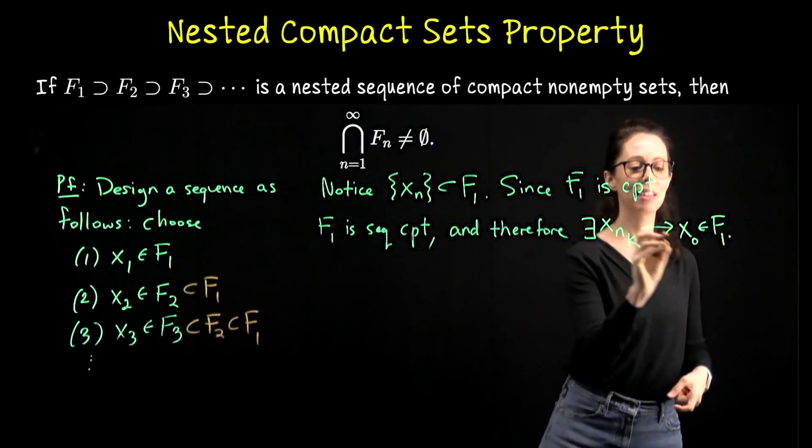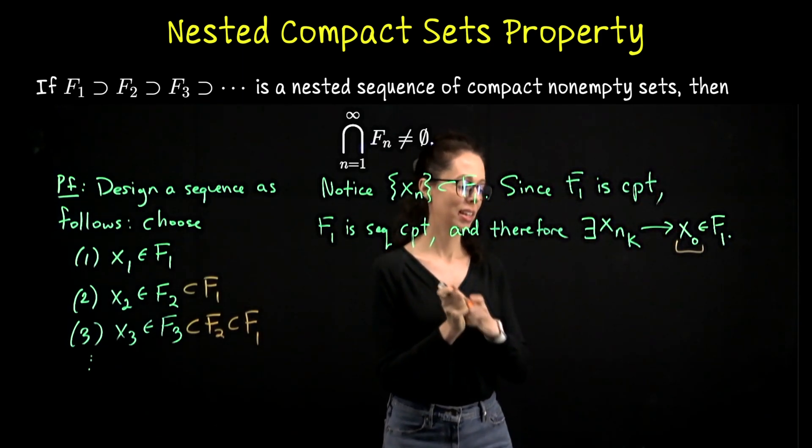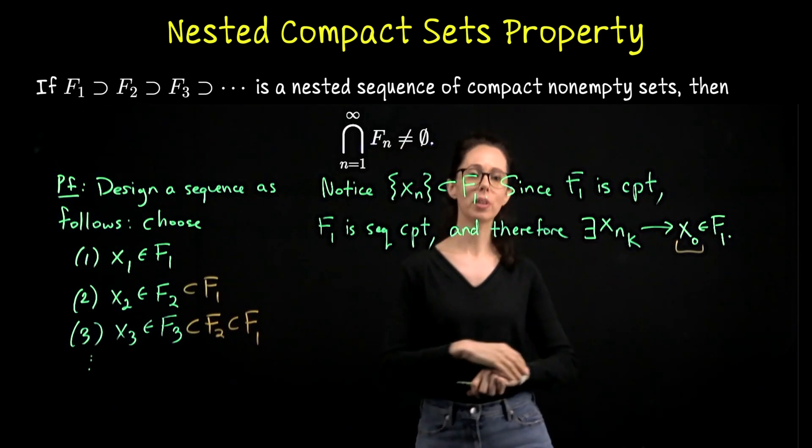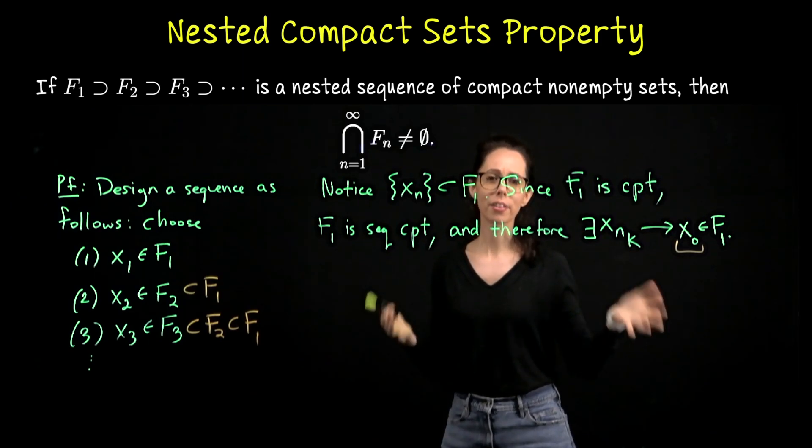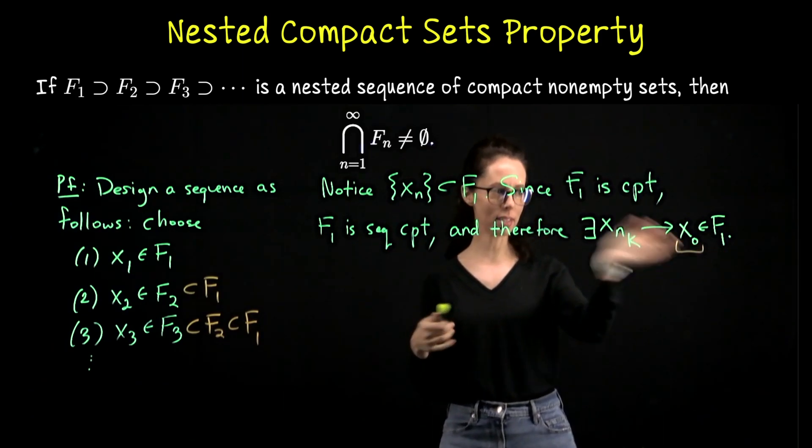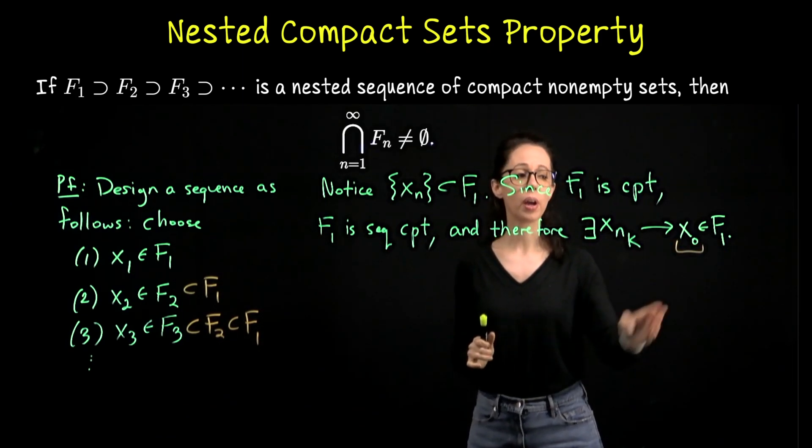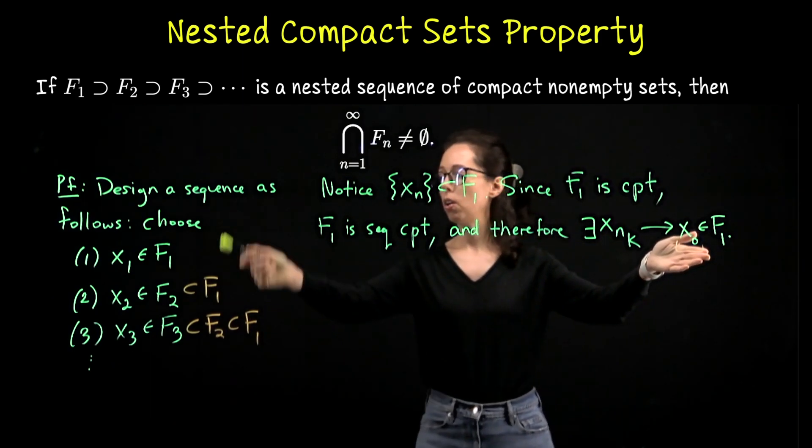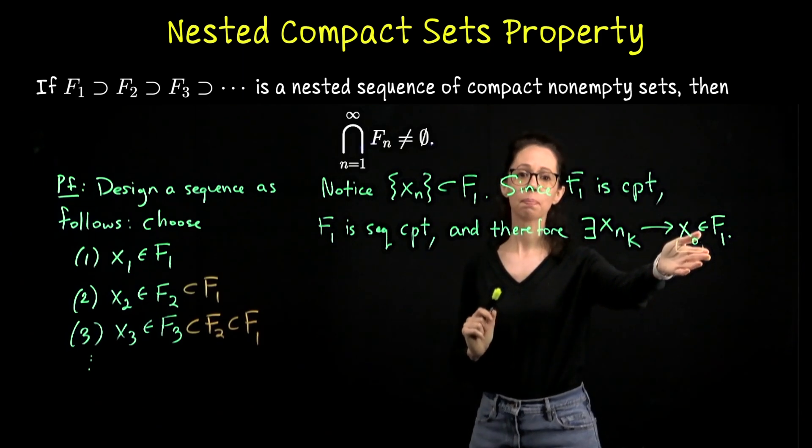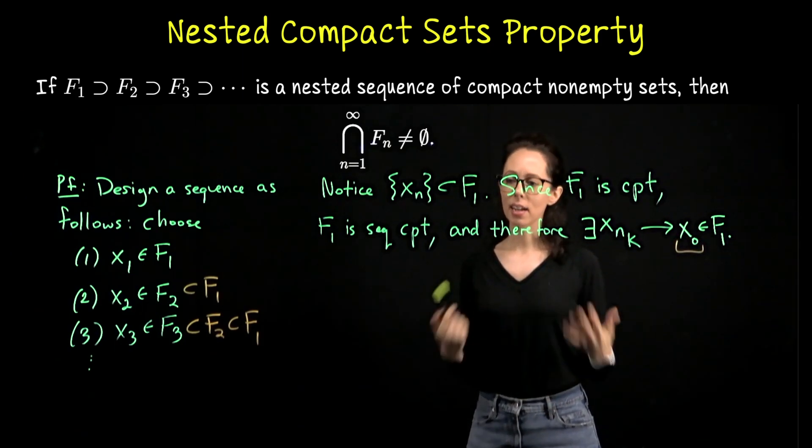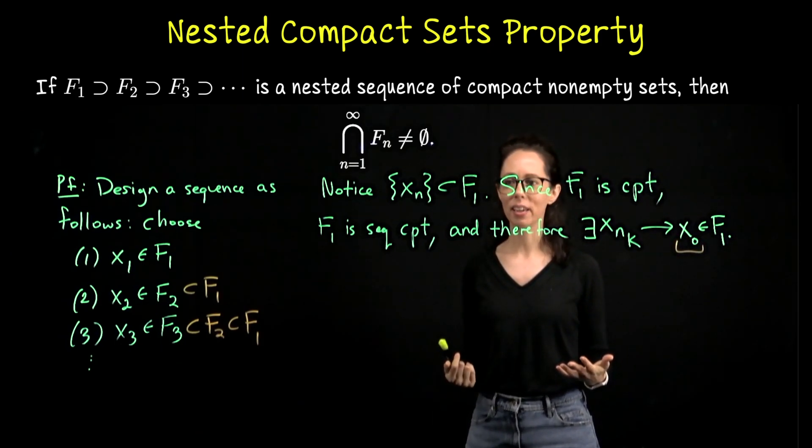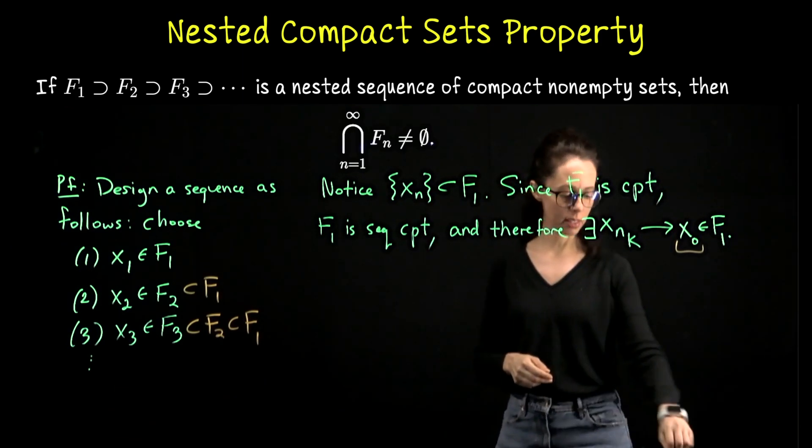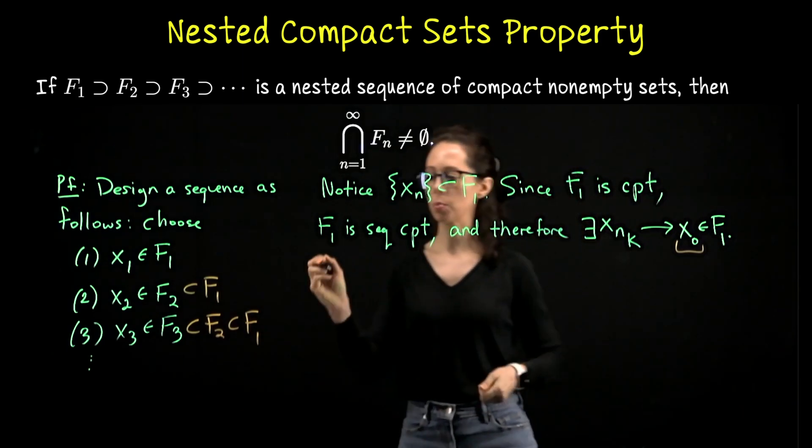This limit here is what I claim will live in the intersection. So it's the reason why this is not going to be empty. There may be other things that survive the intersecting process, but this definitely will. That's what we have to show. We need to show that this limit actually lives in all of this family. It's not too bad. Let me write out a demonstration for what this subsequence could look like. So this is a bit of an aside. I'm just trying to illustrate this proof.